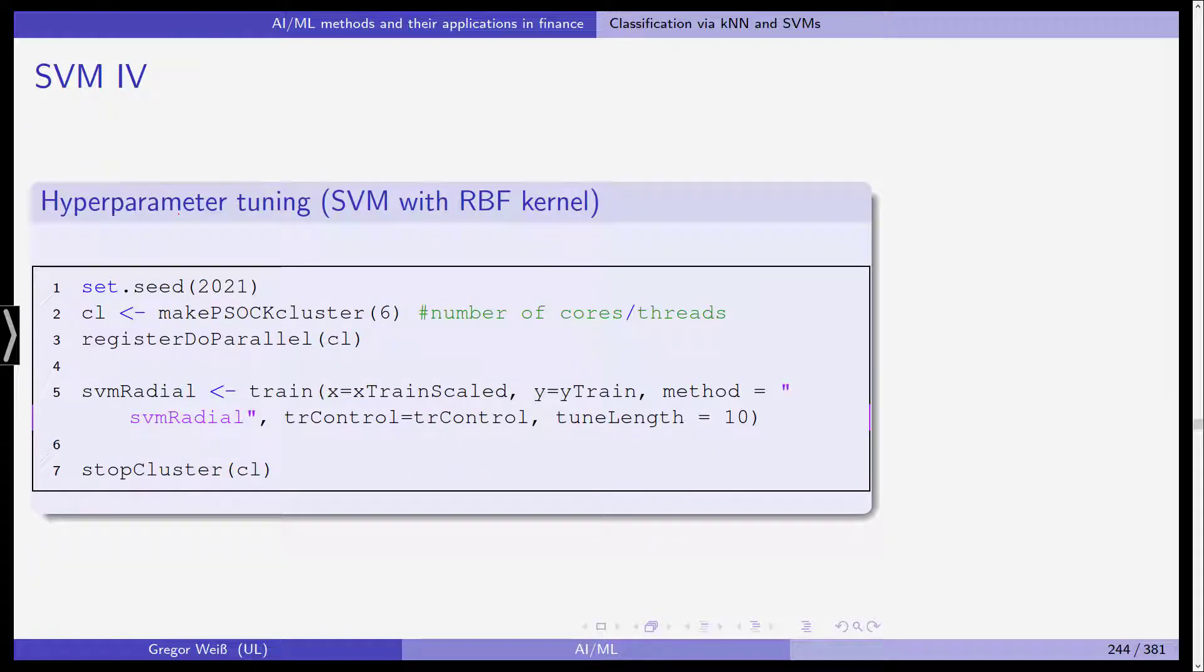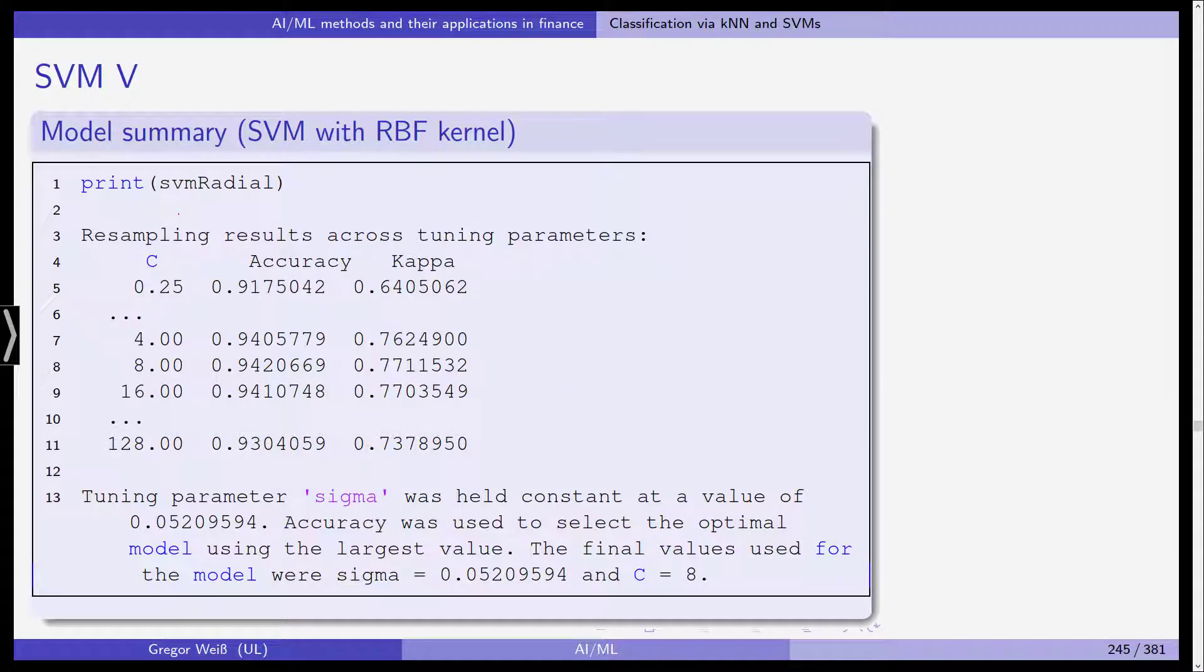We can do the same with the radial basis function kernel. Again, set seed, initialize the parallel computing cluster and then SVM radial is the option we need to set the method to and the tune length is 10. We stop the cluster and get results for the second support vector machine.